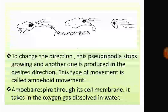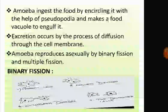The respiration process takes place by diffusion. Amoeba takes in oxygen gas dissolved in water. Amoeba ingests food by encircling it with pseudopodia. When it comes in contact with food, it extends its pseudopodia, encircles the food, and forms a food vacuole to engulf it.